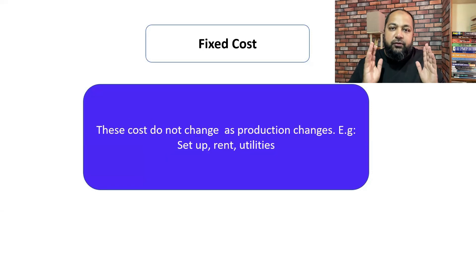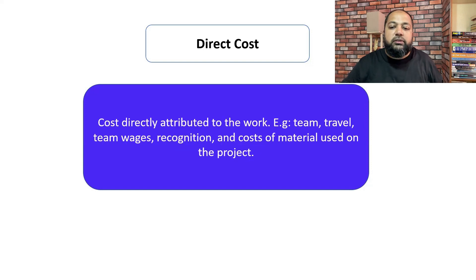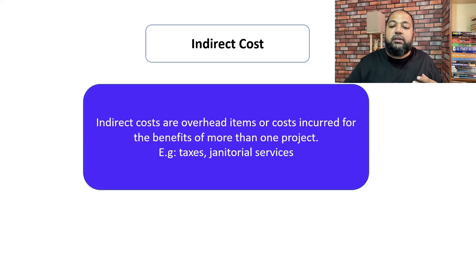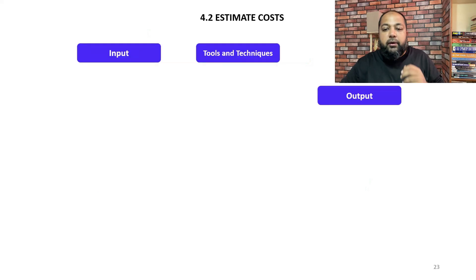Fixed cost is something like setup cost, rent, utilities — things which are fixed on the project and won't change throughout. For example, your office cubicles and office rent are fixed costs. Direct cost includes things like team travel and team wages — cost of materials used directly on the project. Indirect cost includes taxes, stationery, or janitorial services needed to maintain workplace hygiene. Remember these four types: variable cost, fixed cost, direct cost, and indirect cost.